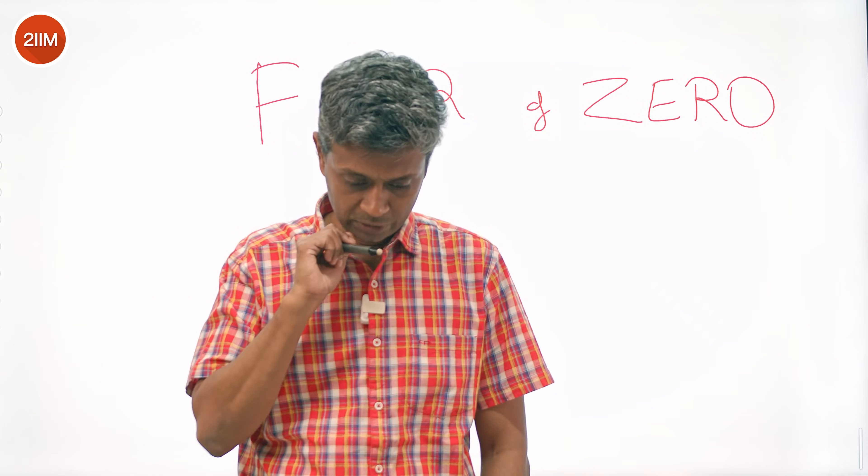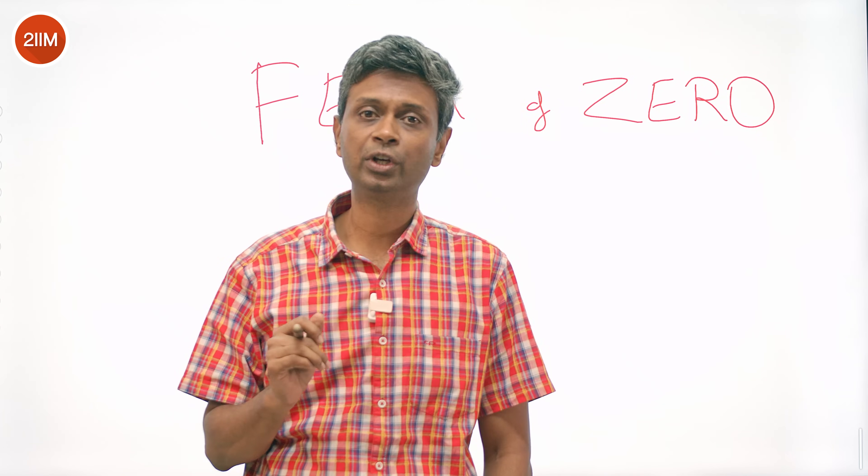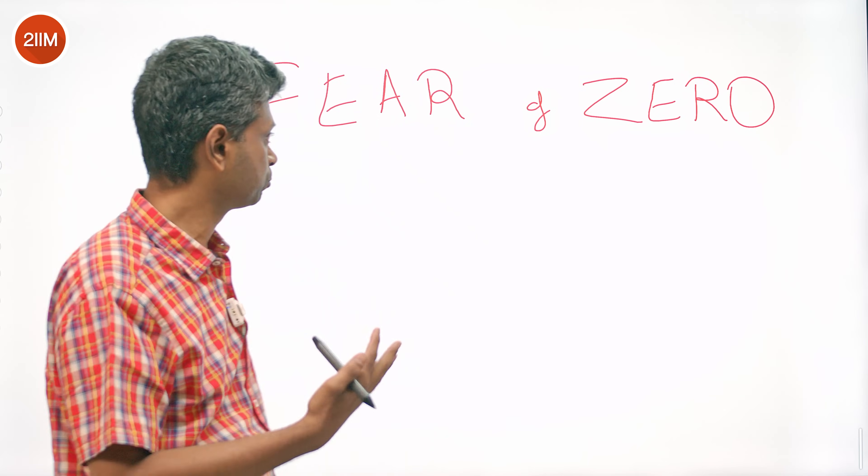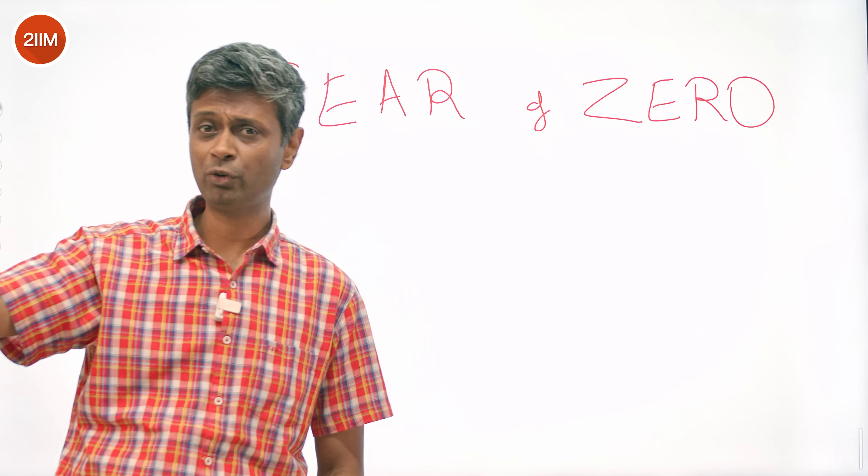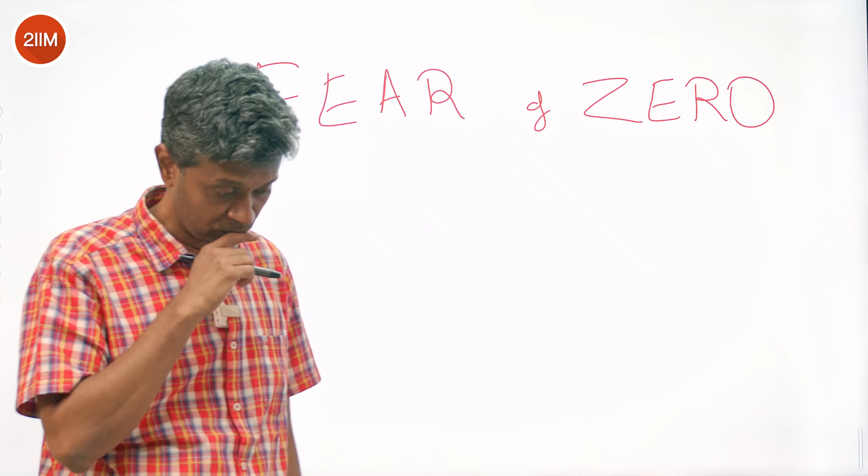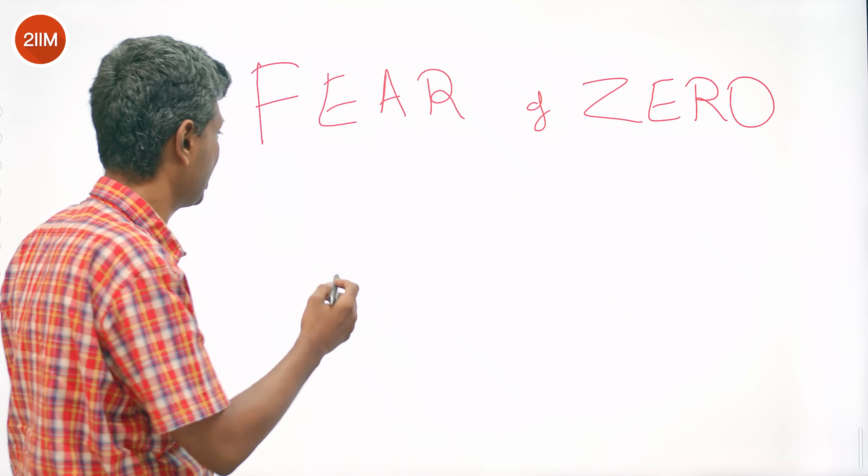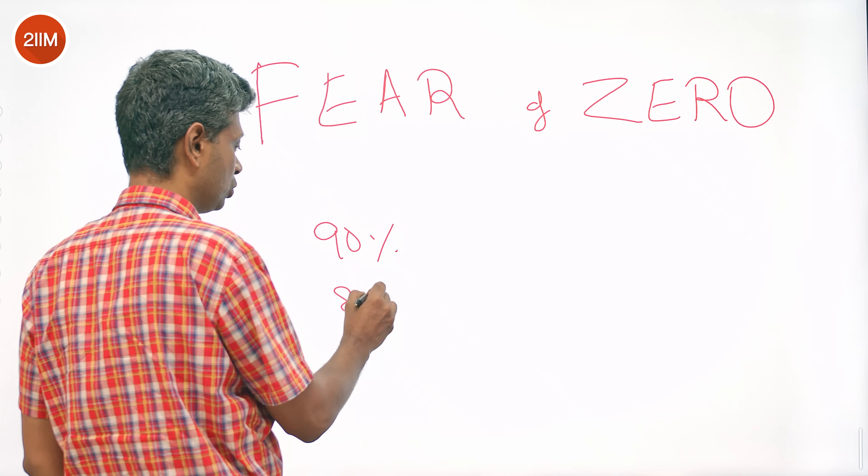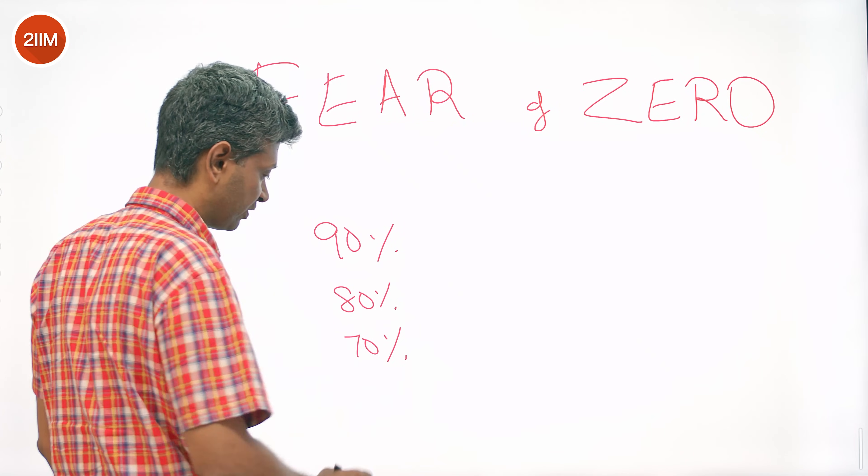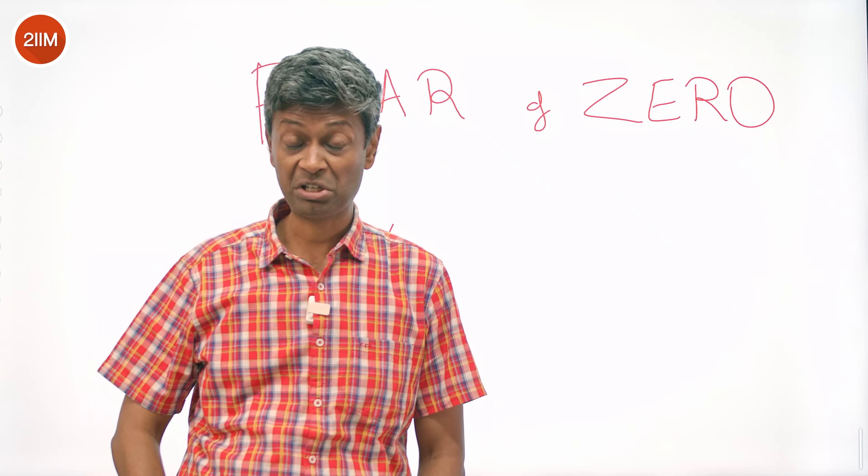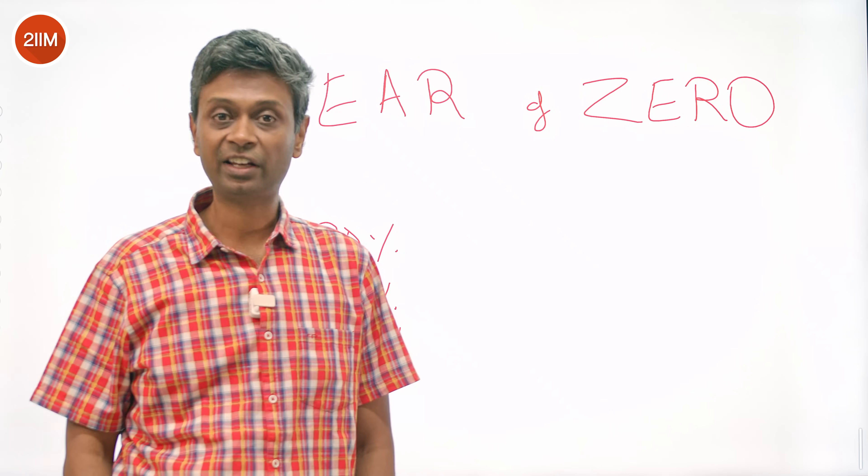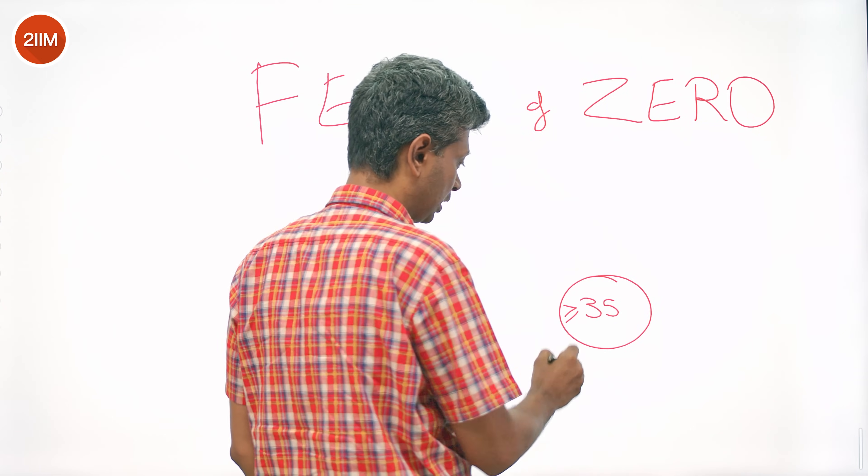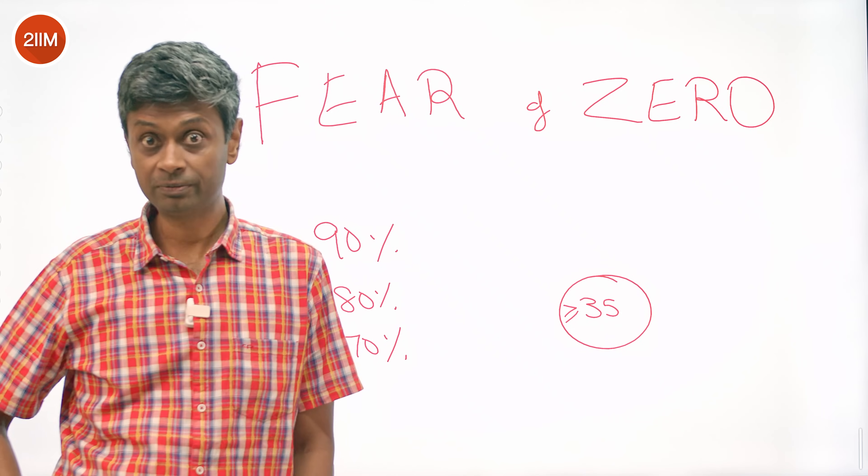So fear of zero is very different from fear of not scoring great. To give you an analogy, sometimes when you are preparing for exams, some of you may be stellar students who average 90%. One exam you mess up, you are worried about 80, sometimes you are worrying about 70. It's a scary thought that you are worried about it. But the guys who are worried about can I get 35 are living a whole different world. It's definitely scarier.